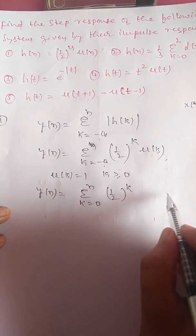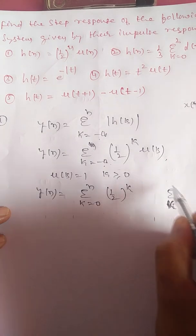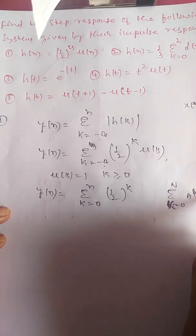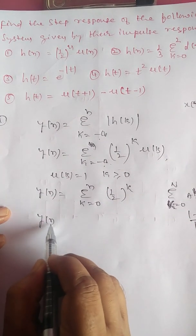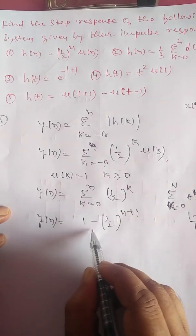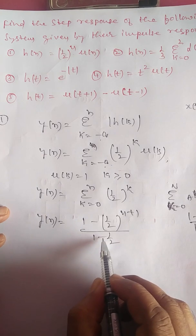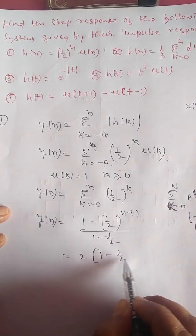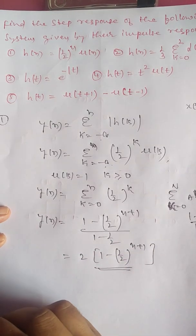We know the formula: summation of k from 0 to n of a^k = (1 − a^(n+1)) / (1 − a). Similarly, we can write the answer as (1 − (1/2)^(n+1)) / (1 − 1/2). After simplification, 1 − 1/2 becomes 1/2, so this can be written as 2·(1 − (1/2)^(n+1)). This is the step response of the first problem.